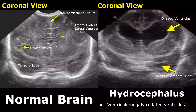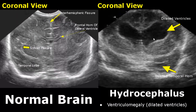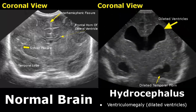Now we move on to pathologies. The first case is hydrocephalus. There is abnormal accumulation of CSF within the lateral ventricles, leading to dilated ventricles. The temporal horn is also dilated. Here is another case of hydrocephalus — we see dilated ventricles with temporal horns also dilated.